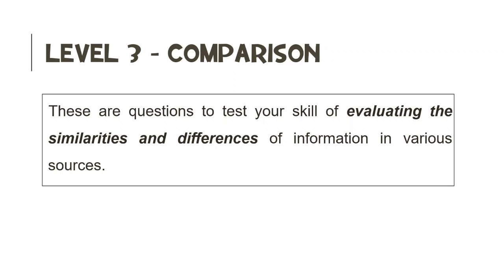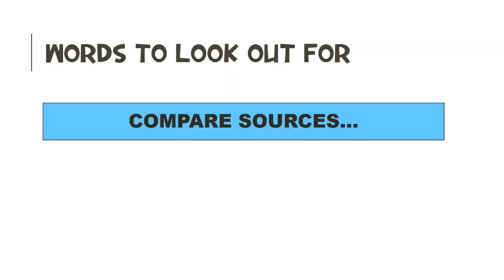Let's take a look at Level 3 comparison questions. These are questions that test your skill of evaluating the similarities and differences of information in various sources. How do we know when a question is a Level 3 comparison question? We need to look out for the word 'compare'. When we see this word in a question, we know we are dealing with a Level 3 comparison question, and we have to compare the information from both sources.